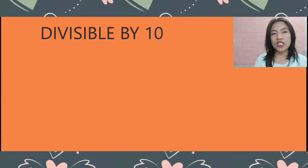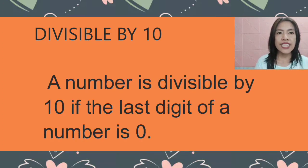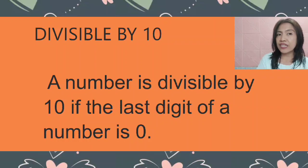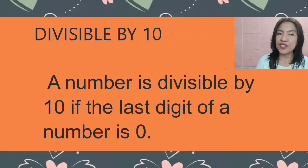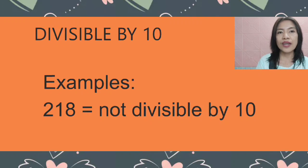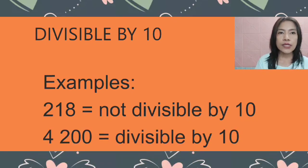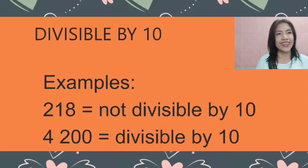This is the last rule I'm going to discuss. Divisible by 10. A number is divisible by 10 if the last digit is 0. So in divisible by 5, the last digit should be 5 or 0; here in divisible by 10, the last digit should be 0. Example: 218 is not divisible by 10 because the last digit is 8. But 4,200 is divisible by 10 because the last digit is 0.